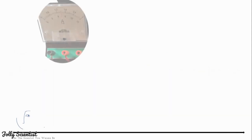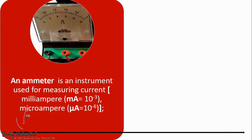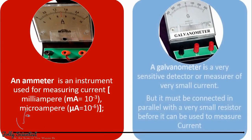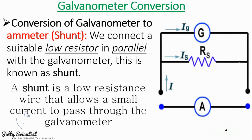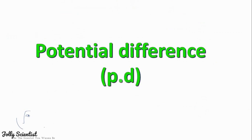Current measuring devices. An ammeter is an instrument used for measuring current, while a galvanometer is a very sensitive detector or measure of very small current. To convert a galvanometer to an ammeter, we must connect a suitable low resistor in parallel with the galvanometer. This is known as a shunt. A shunt is a low resistance wire that allows small current to pass through the potential difference.